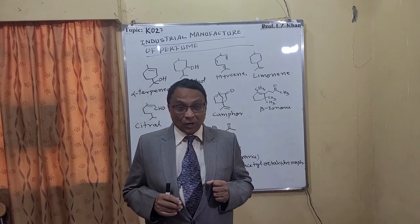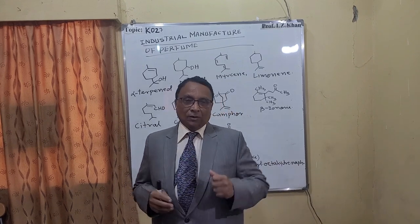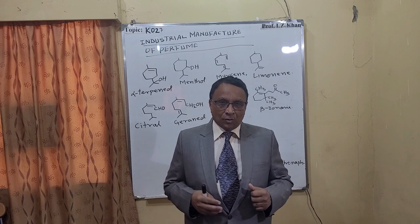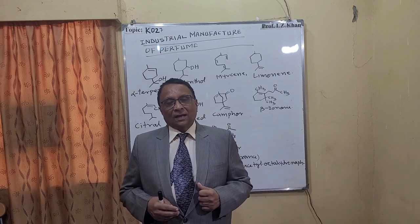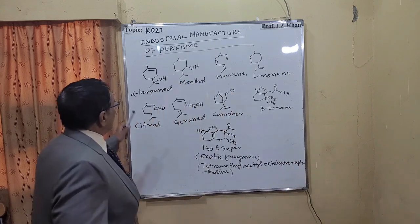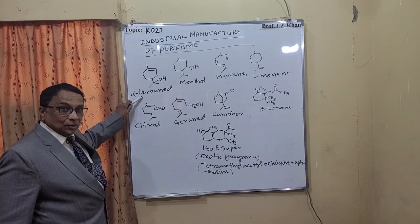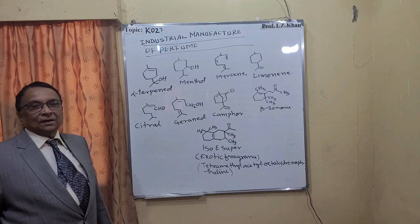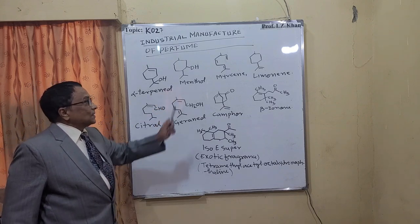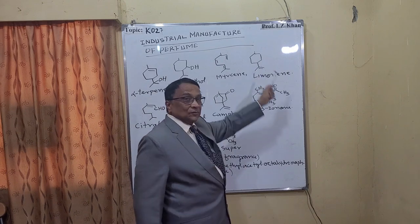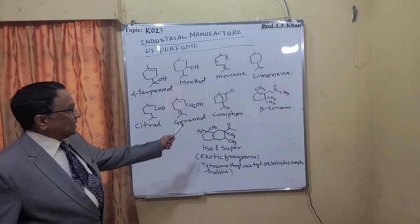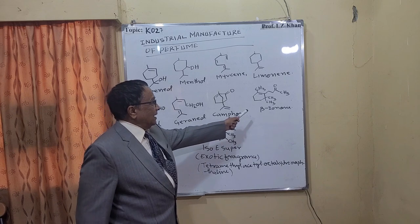The most important terpene structures in perfumery are: alpha-terpineol, citronellol, geraniol, alpha-ionone, beta-ionone, and camphor. These are all terpenes and constituents of the perfumery industry. The first structure shown is alpha-terpineol, followed by menthol, myrcene, limonene — obtained from lemongrass oil — citronellol, camphor, and beta-ionone.